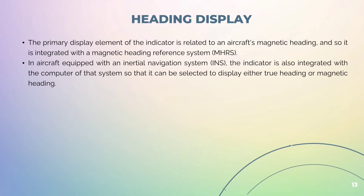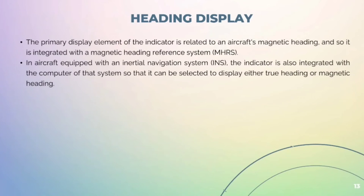The primary display element of the indicator is related to an aircraft's magnetic heading, so it is integrated with a magnetic heading reference system. In aircraft equipped with an inertial navigation system, the indicator is also integrated with the computer of that system so that it can be selected to display either true heading or magnetic heading.